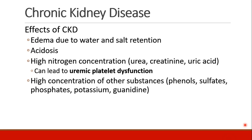Chronic kidney disease patients will have edema because they're retaining salt and water. They can become acidotic. They may have a high nitrogen concentration because the kidney excretes substances like urea, creatinine, and uric acid. High urea levels can actually lead to uremic platelet dysfunction as well. And other substances like phenols, sulfates, phosphates, potassium, and guanidine will all start to build up as the kidneys get sicker and sicker.